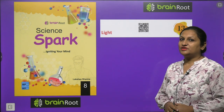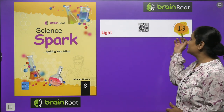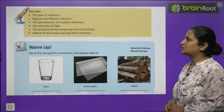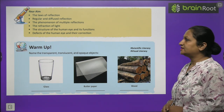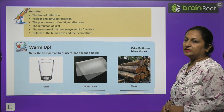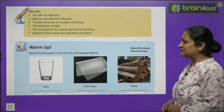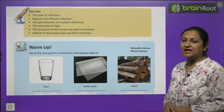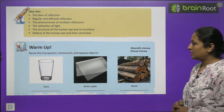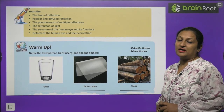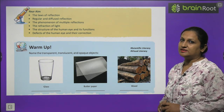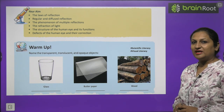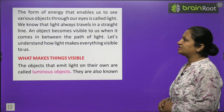Hello, my dear children. This is Shikha Arora and today we are going to start with Class 8 Science Chapter 13, that is Light. The main aim of this chapter will be the laws of reflection, regular and diffuse reflection, phenomenon of multiple reflection, refraction of light, the structure of human eye and its function, defects of human eye and their correction.